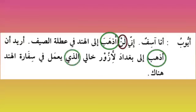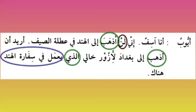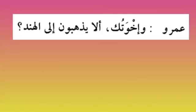'Alladi' is coming as a na't and we know it is ism mawsool, so it has a sila. I want to go to Baghdad to visit my uncle — the one who 'ya'malu fi sifarat al-hind' — working at the Indian embassy over there. Then Amr asks: what about your brothers? 'Ikhwatuka' — 'ala yadh-habuna ilal hind?' — 'la' and 'yadh-habuna' is fi'l mudari marfu', so this 'la' has no effect — it is 'la nafia'. Are they not going to India?